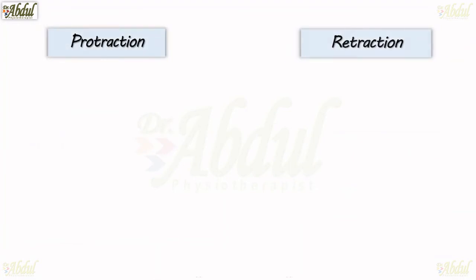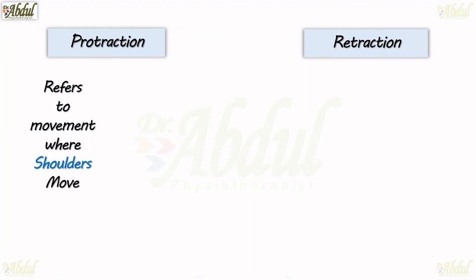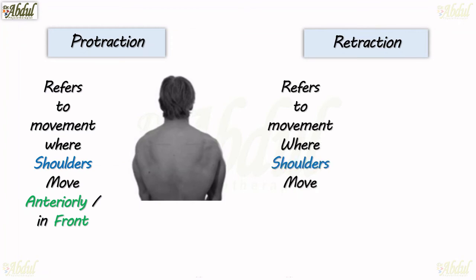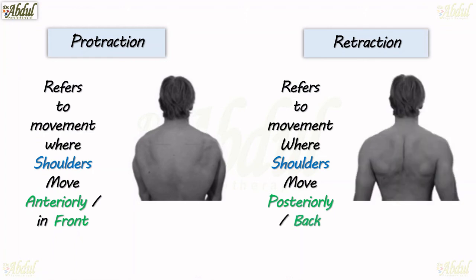Protraction and its antagonistic movement is retraction. Protraction refers to a movement where the shoulders move anteriorly, or forward — something like this. Retraction refers to a movement where the shoulders move posteriorly, or back — something like this.